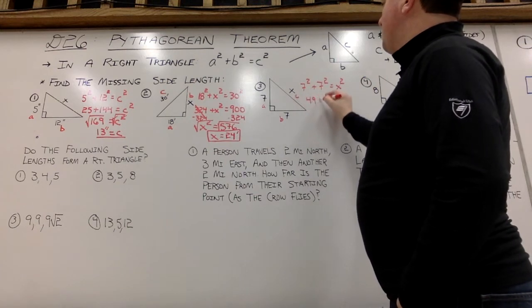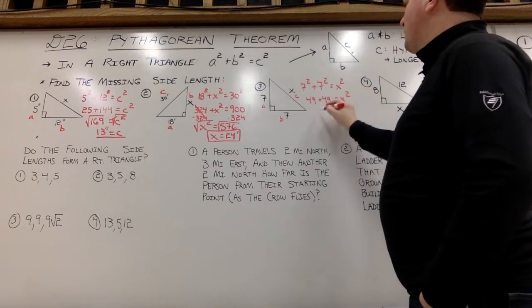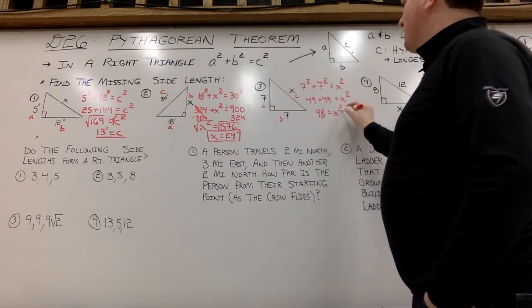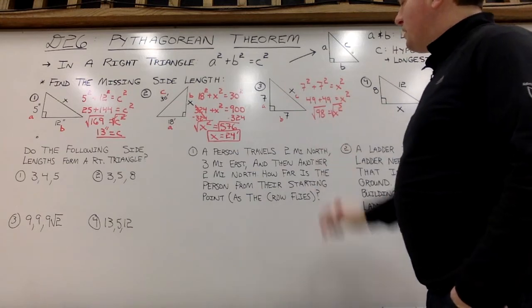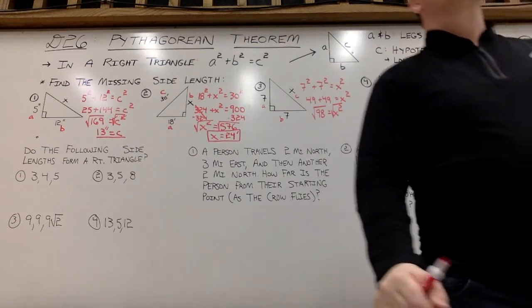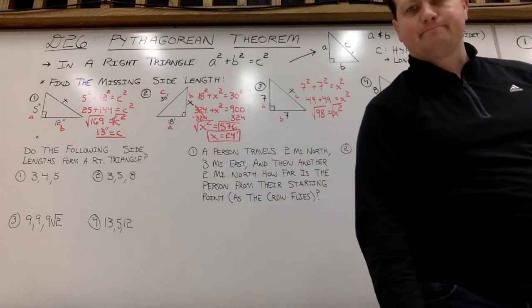So I'd go 7 squared plus 7 squared equals x squared. 7 squared is 49, 7 squared is another 49, that'll equal x squared. 98 equals x squared. So when you square root, here's where you start scratching and maybe sniffing a little. Do I smell what that square root is going to be? Well, I don't know.